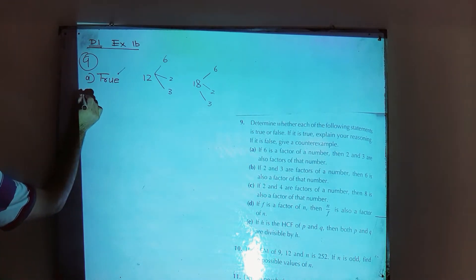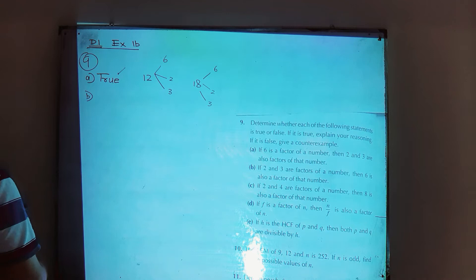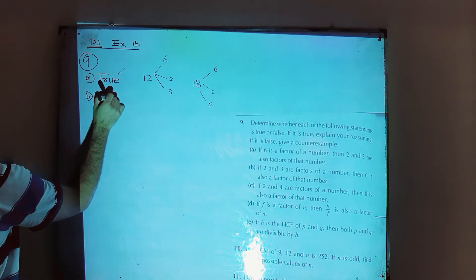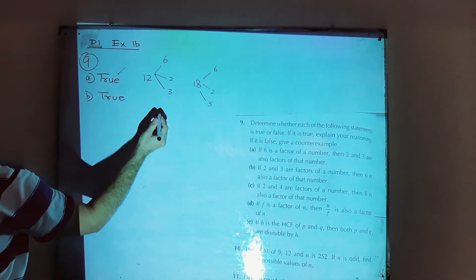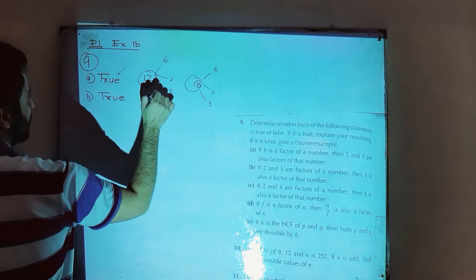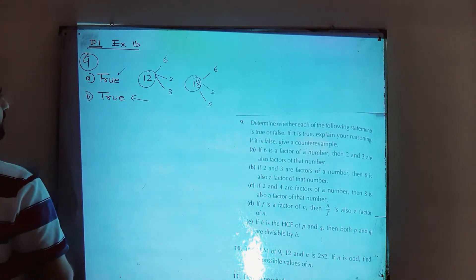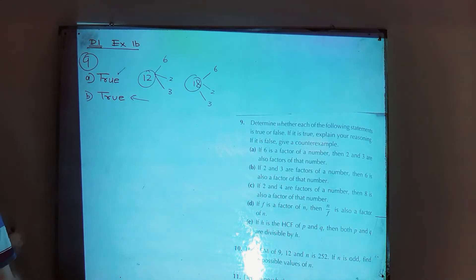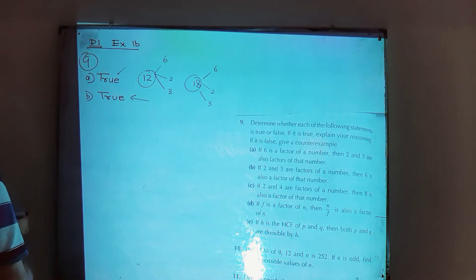Part B: if 2 and 3 are factors of a number, then 6 is also a factor of that number. True. The same reason applies: if 2 and 3 are factors of 12, then 6 is also a factor of 12.